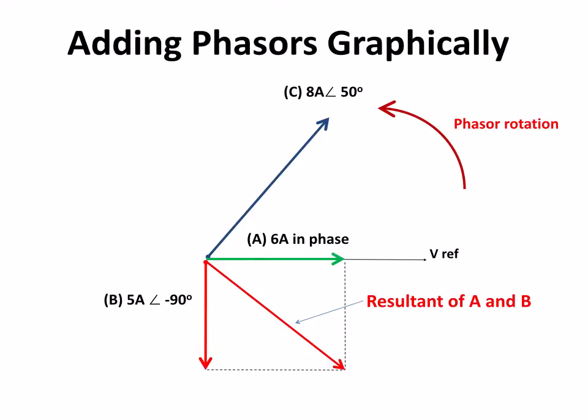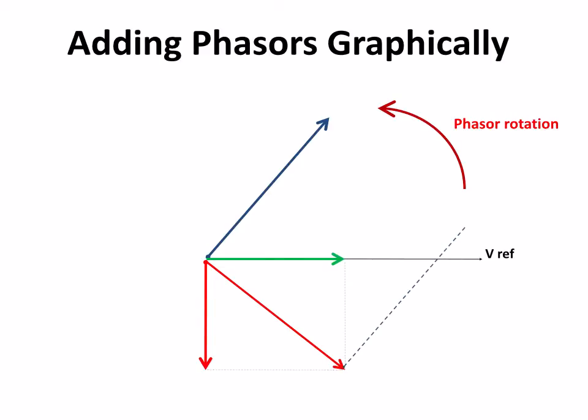We're then going to add this resultant to the current C, which is our eight amps. So I'm just going to take that detail away there. And we're going to draw a parallelogram now with the eight amps and that resultant. So that blue dotted line is parallel to the blue eight amps. And the red dotted line is parallel to the red resultant.